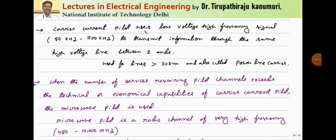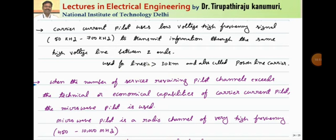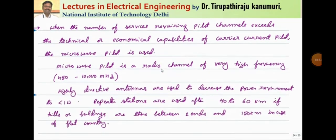The carrier current pilot uses a low voltage high frequency signal in the order of 50 kHz to 700 kHz to transmit information through the same high voltage line between two ends. Generally, this is used for lengths greater than 30 kilometers and is also called power line carrier. At the sending and receiving ends, extra devices are needed for transmitting and receiving the signal, so the investment is more. Above 30 kilometers, when compared to the cost of the wired system, carrier communication becomes cheaper.